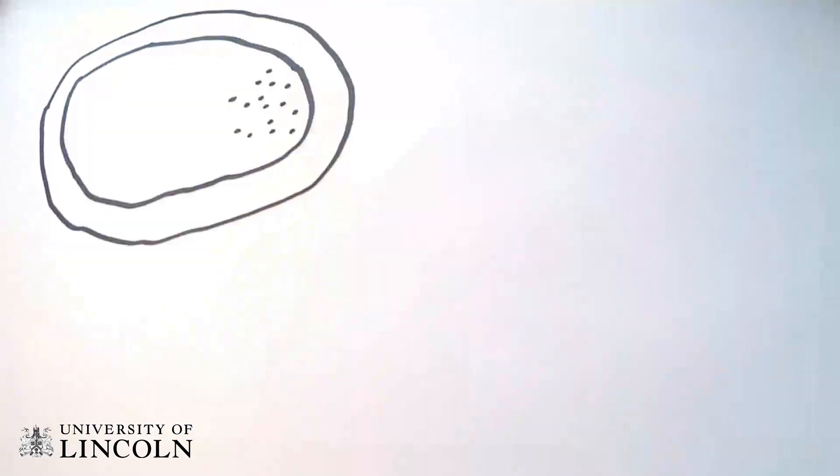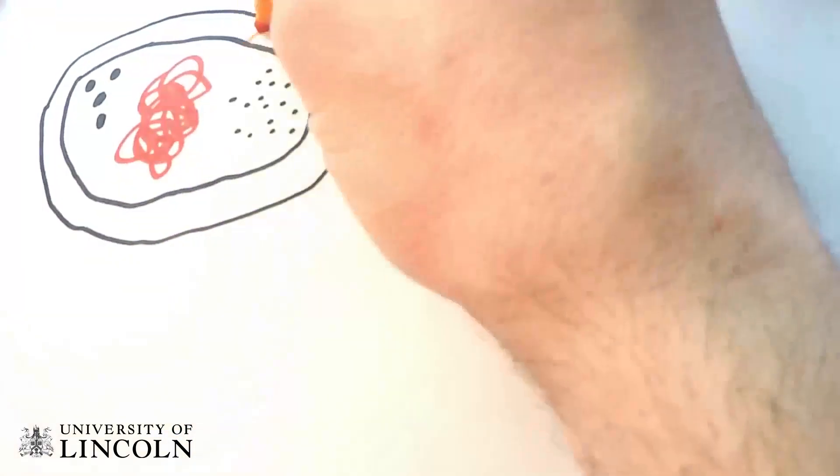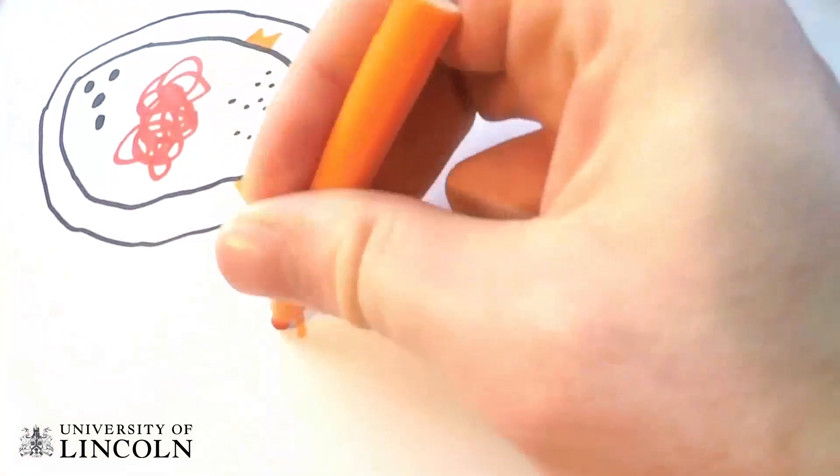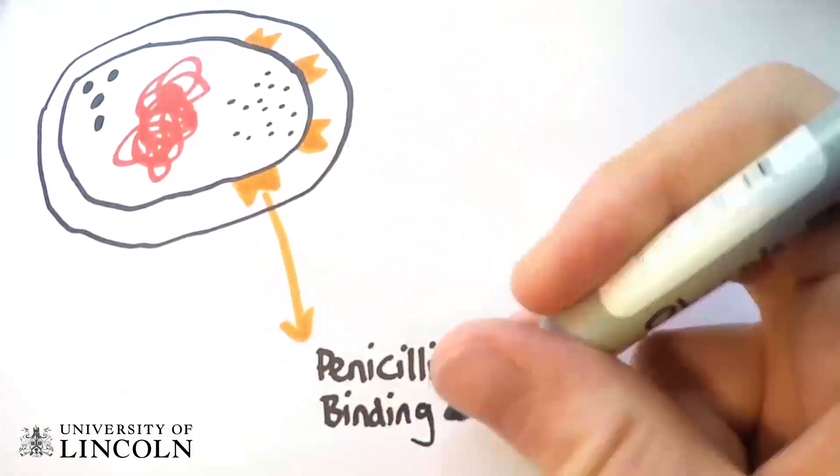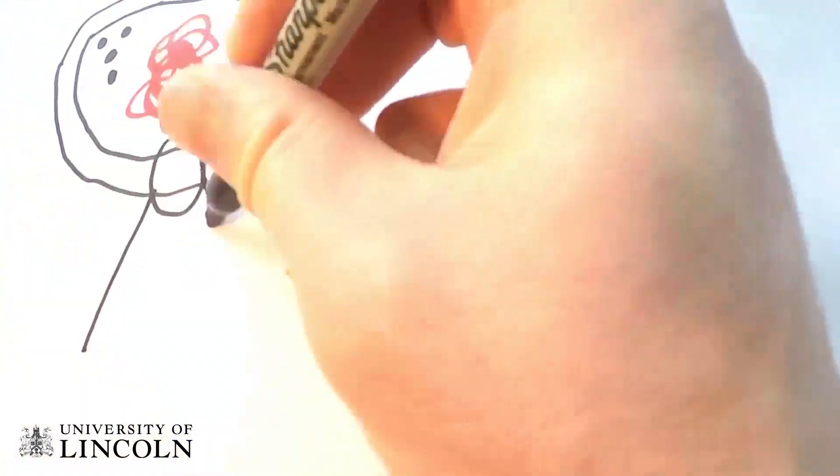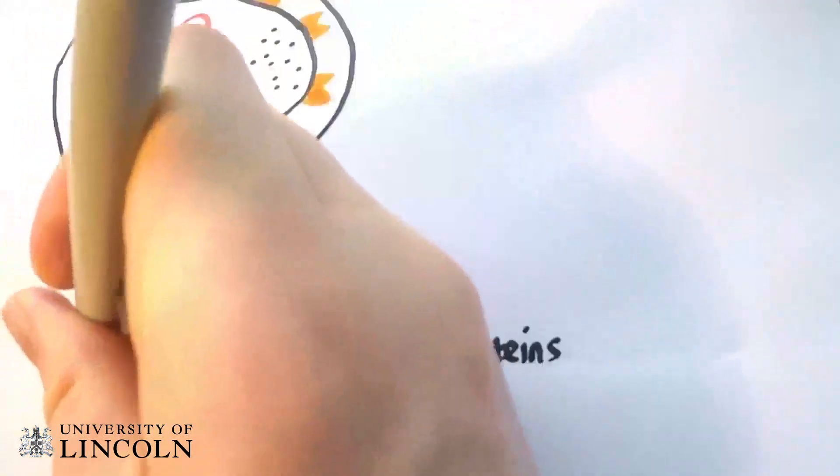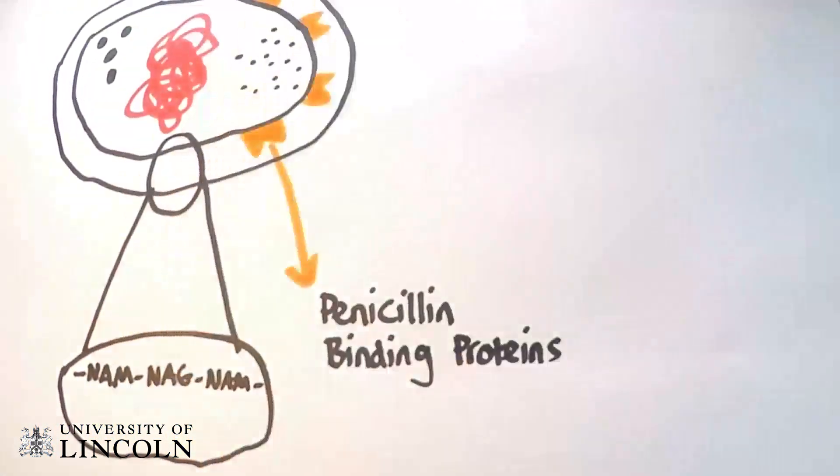So how do beta-lactamases work? Bacteria cells contain enzymes called penicillin binding proteins. Bacterial cell walls are composed of peptidoglycan, made up of alternating NAM and NAG subunits.